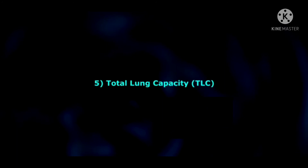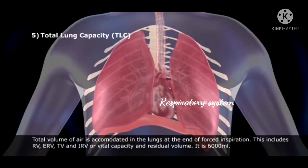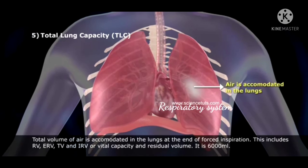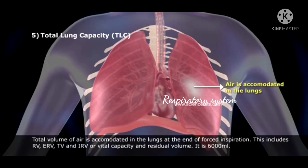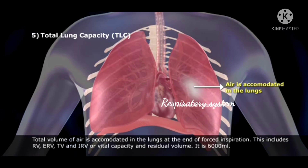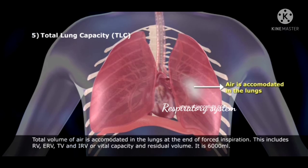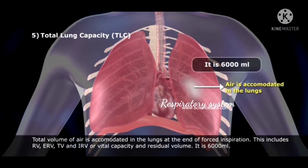Next is total lung capacity, TLC — the total volume of air accommodated in the lungs at the end of a forced inspiration. This includes RV, ERV, TV, and IRV, which is equivalent to vital capacity plus residual volume. It is 6,000 ml. All of you should now understand this topic on lung capacity. Thank you.